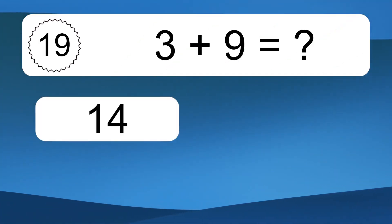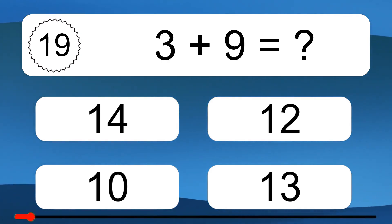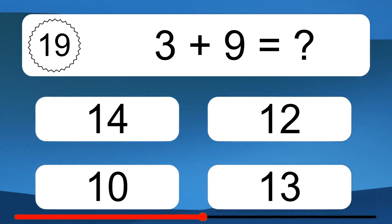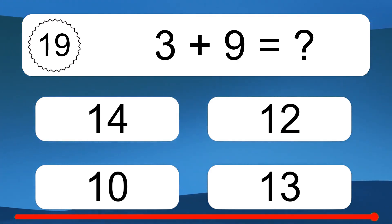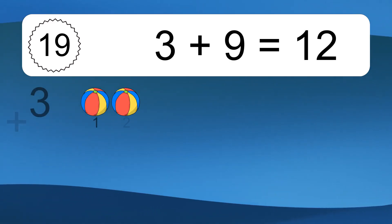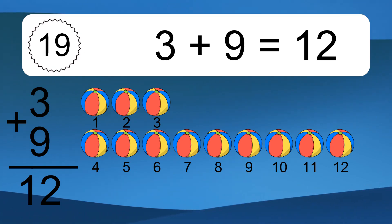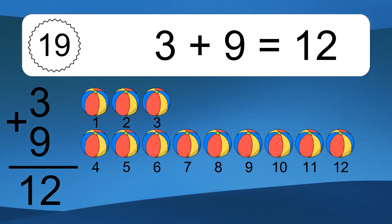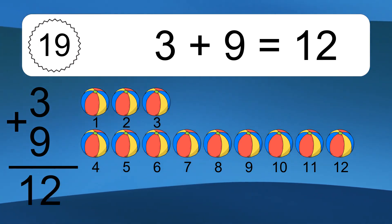3 plus 9 equals what? 3 plus 9 equals 12. Let's count it, 1, 2, 3, 4, 5, 6, 7, 8, 9, 10, 11, 12.